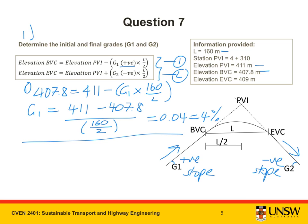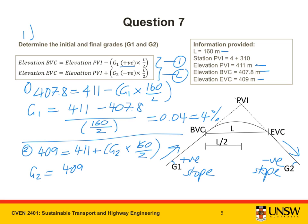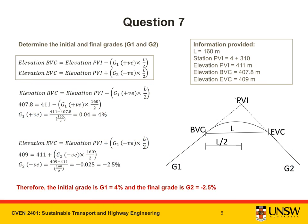Substituting into equation 2: elevation of EVC = 409 meters = elevation of PVI (411) plus G2 times L over 2 (160 over 2). G2 will be negative. Rearranging: G2 = (409 − 411) / 80 = −0.025, which is also equal to −2.5%.